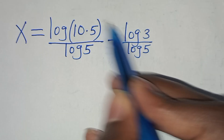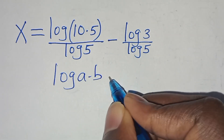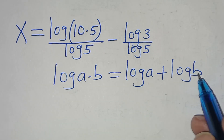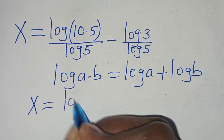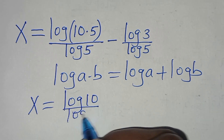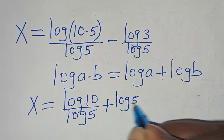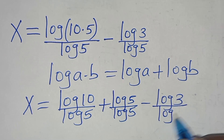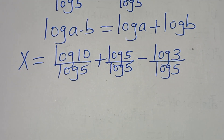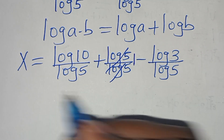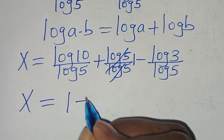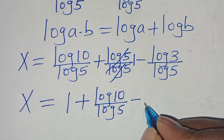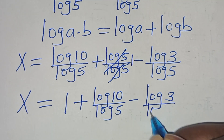Now here we have log(10 times 5), this is in the form of log(a times b), which we can express as log a plus log b. Applying this property, then here we have x equal to log 10 over log 5, then plus log 5 divided by log 5, subtract log 3 divided by log 5. Let's simplify: log 5 over log 5 is 1, so that x here is equal to 1 plus log 10 divided by log 5, subtract log 3 divided by log 5.